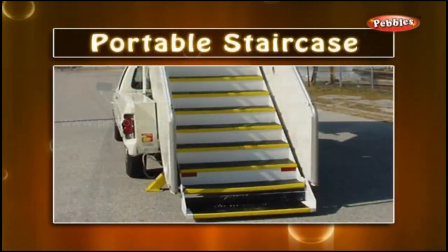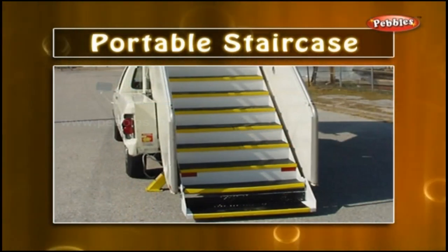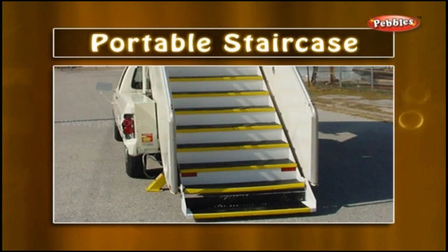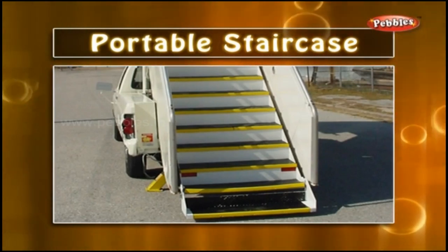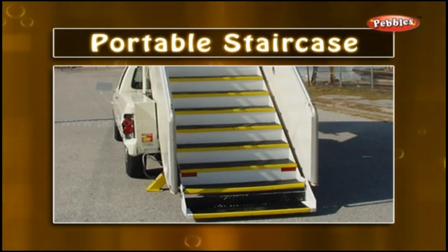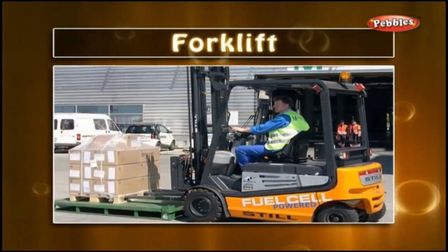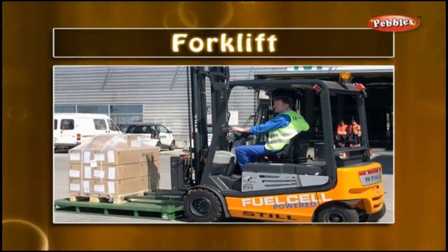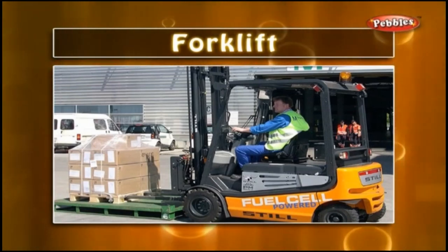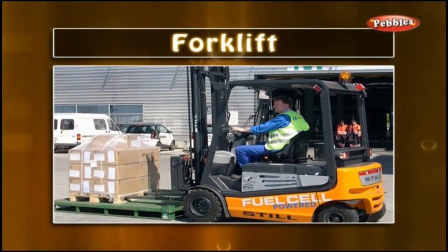Portable Staircase: An airplane does not have its own staircase. When the airplane arrives at the airport, a separate staircase mounted on a car is attached to the doors of the airplane. Forklift: A forklift is a powerful vehicle used to lift and carry heavy luggage. It has two forks in the front on which luggage is lifted and carried.